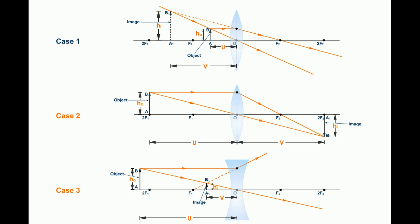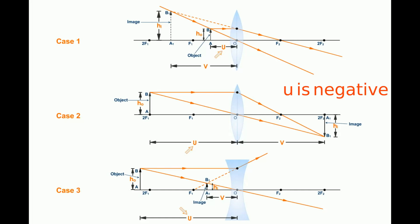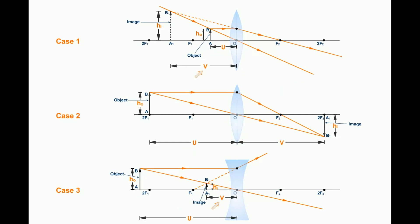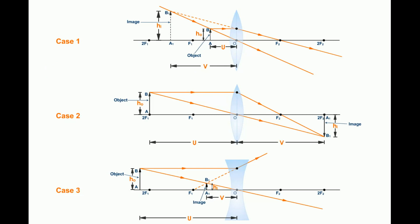Now, what about the sign? In all the three cases, U is negative because it is measured from the lens in the direction opposite to the incident ray. Now, V — in cases 1 and 3, it is negative because it is also measured from the lens opposite to the incident ray. In case 2, V is positive because it is in the same direction as the incident ray. So V is positive.